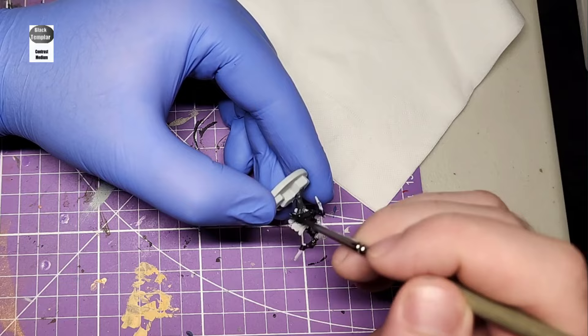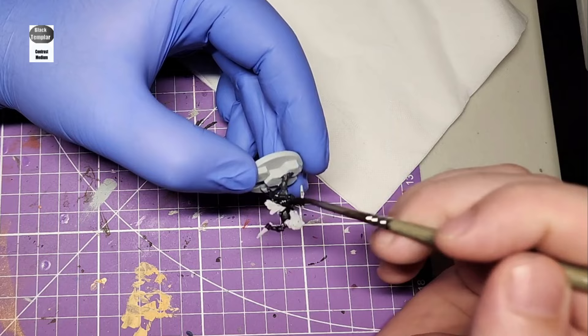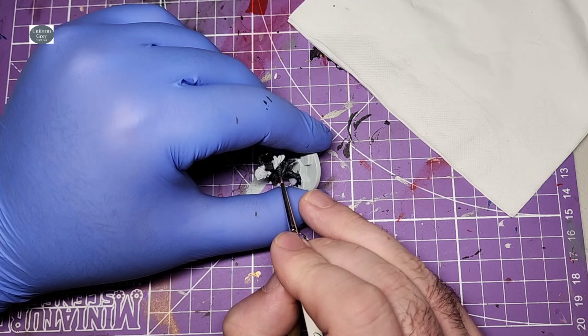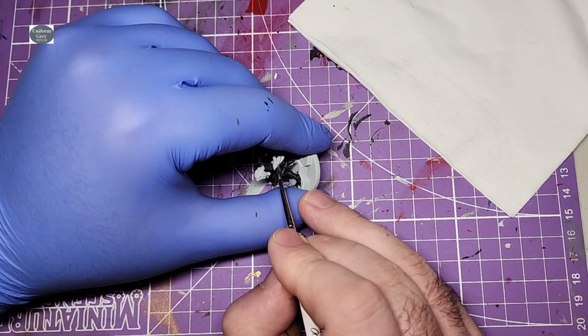Next was a 50/50 mix of Black Templar Contrast and Contrast Medium. This is a black recipe I'm a pretty big fan of and gives nice shadows and highlights while still reading as black. Highlights were Uniform Grey, just hitting the tops and edges that would pick up the light.